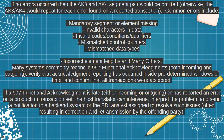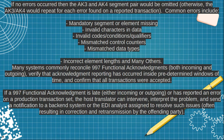If no error occurred, then the AK3 and AK4 segments would be omitted; otherwise AK3 and AK4 would be repeated for each error found on a reported transaction. Common errors include mandatory segment or element missing, invalid character in data, invalid code condition or qualifiers, mismatched control point counters, mismatched data types, incorrect element length, and many others.